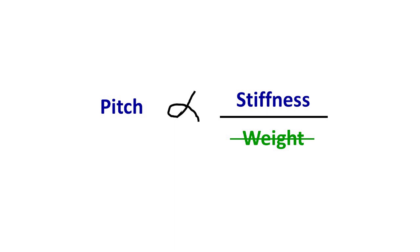But for most manipulations that we do in guitar building, such as thinning a soundboard plate or adding bracing and carving bracing, the stiffness changes we employ often change much faster than the weight changes. So for most of the operations that we do, we can think of pitch being influenced mainly by stiffness and less so by weight.